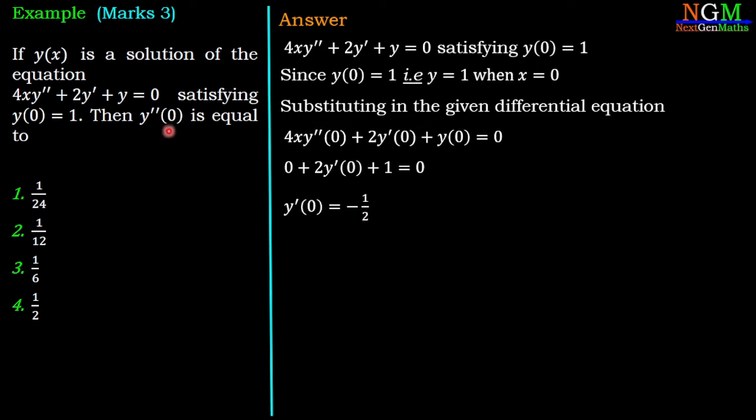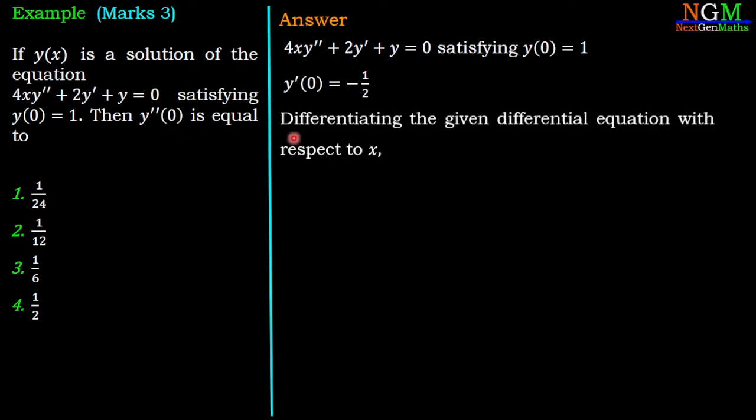But we want to find y''(0). So for that, we differentiate the given differential equation with respect to x. We have for the first term 4x·y'', differentiation with respect to multiplication: 4x as it is, derivative of y'' is y'''. Plus y'' as it is, derivative of x is 1, so we have 4y''.